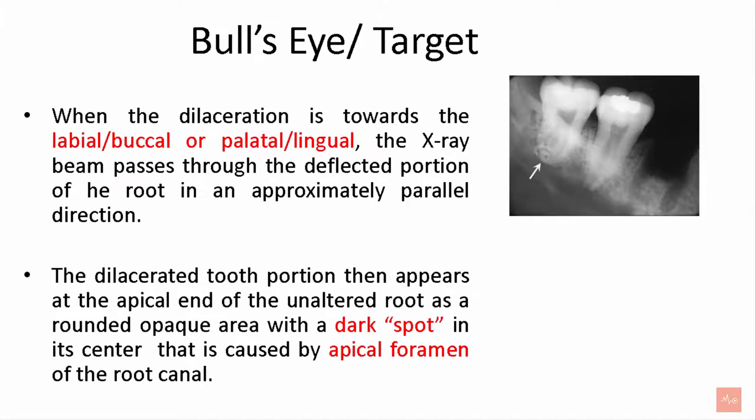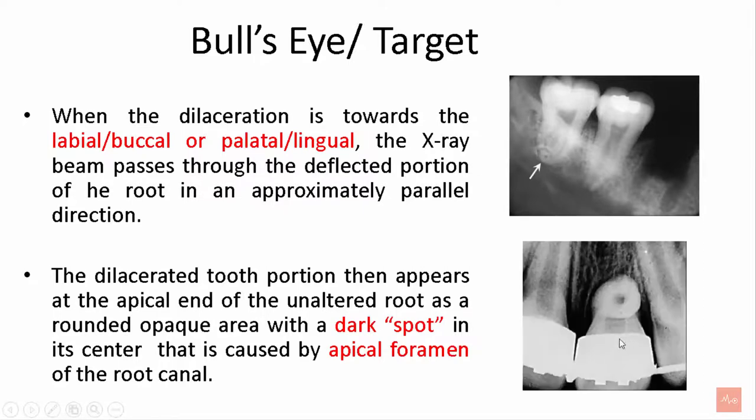The dilacerated tooth portion then appears at the apical end of the unaltered tooth as a rounded opaque area with a dark spot. In this radiograph, you can see a dark spot over here. This is known as bull's eye. This is caused by the apical foramen of the root canal.